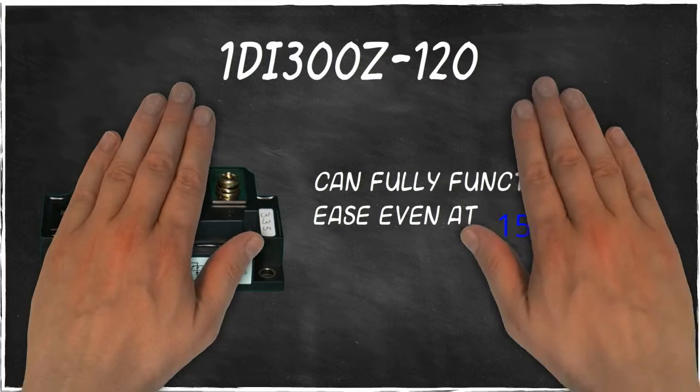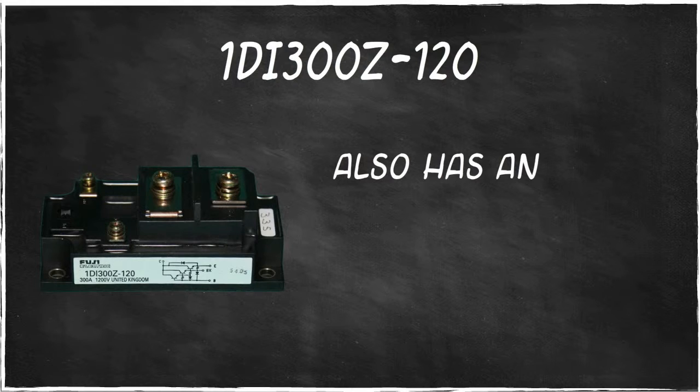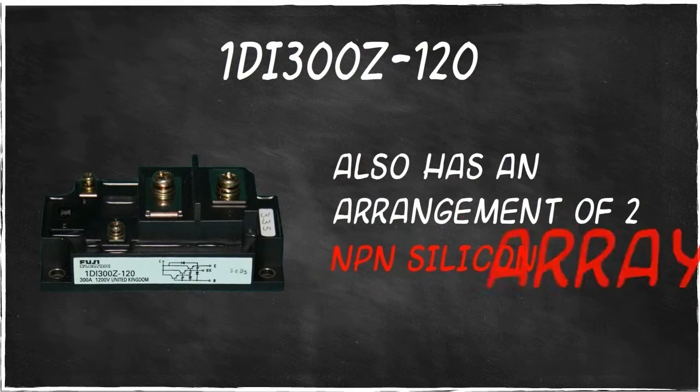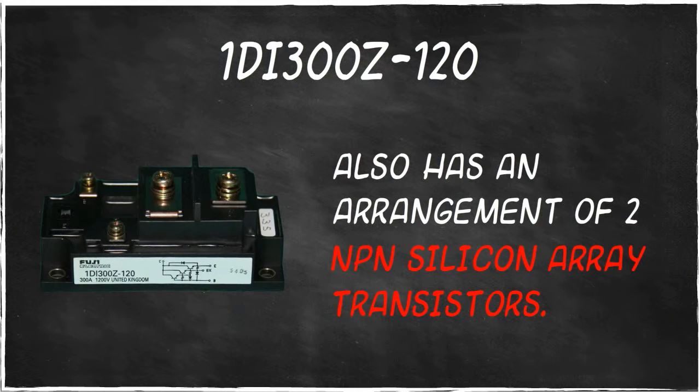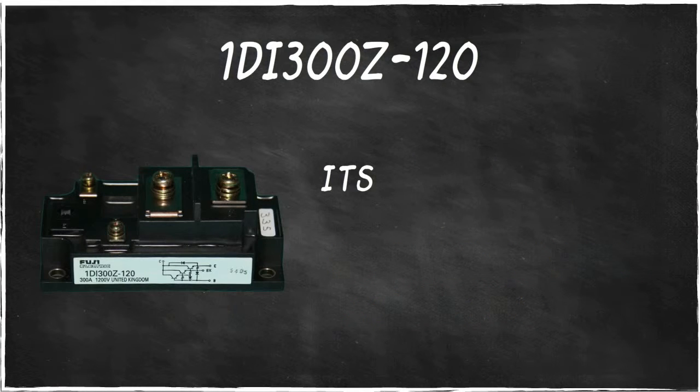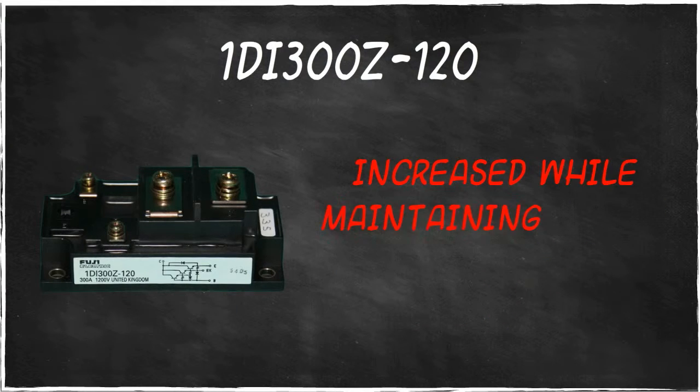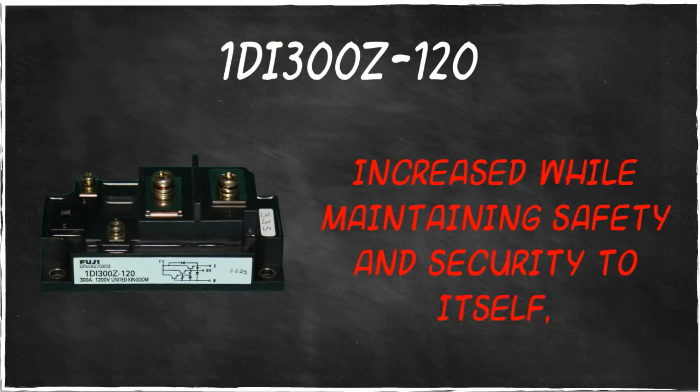But that's not all. 1DI300Z120 also has an arrangement of 2 NPN silicon array transistors. With this component, its current rating dramatically improves and can be increased while maintaining safety and security to itself, to the application, and even to nearby individuals.